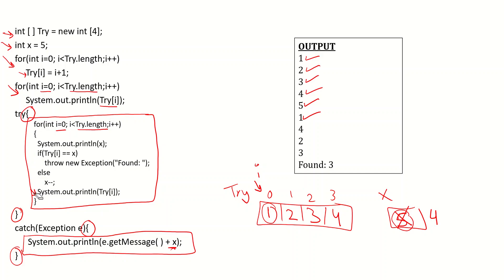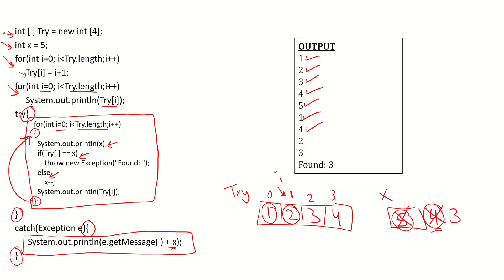Now we go back for the second iteration, incrementing i to 1. We output x — the current value is 4 because we decremented it in the previous iteration. We check arr[1], which is 2 — is it equal to x, which is 4? It is not, so we go to the else and decrement x, making x equal to 3. Then we output arr[1], which is 2.